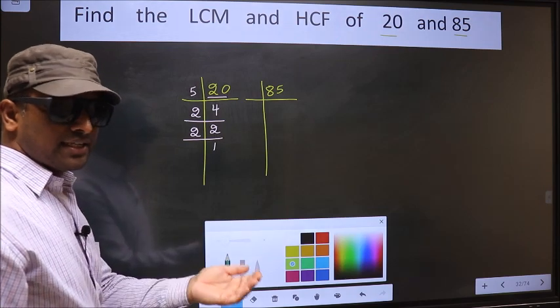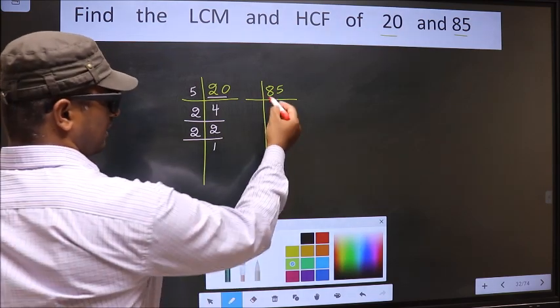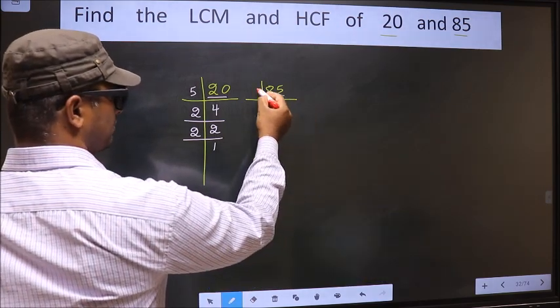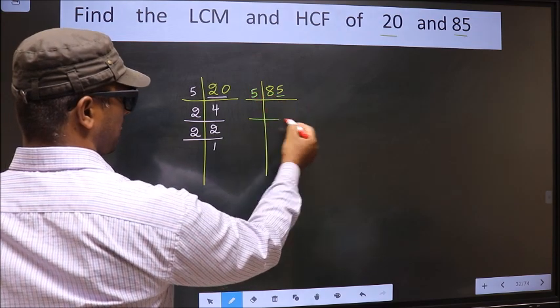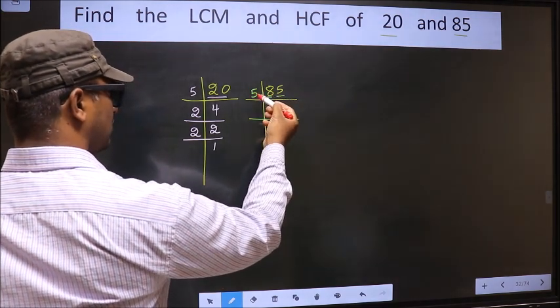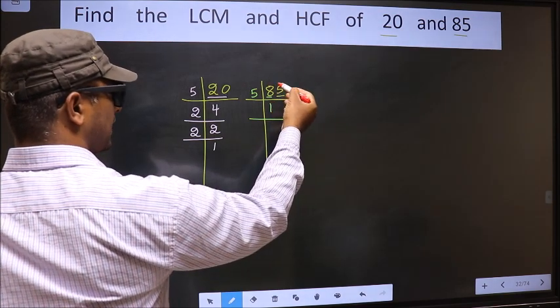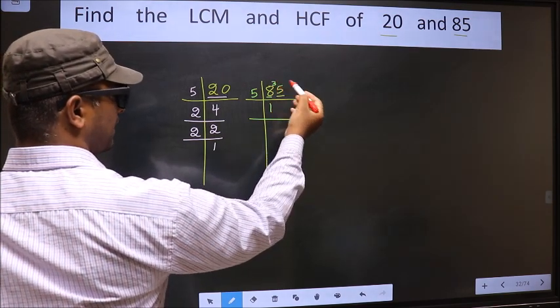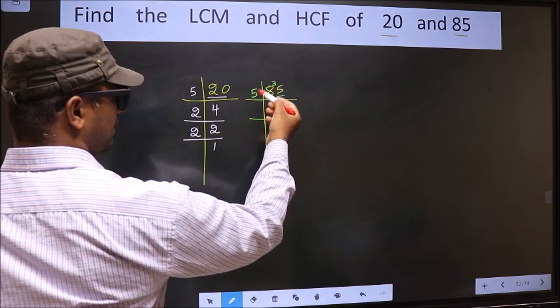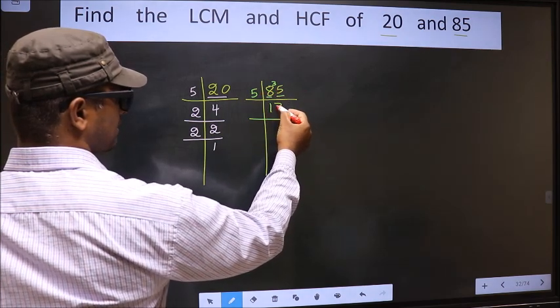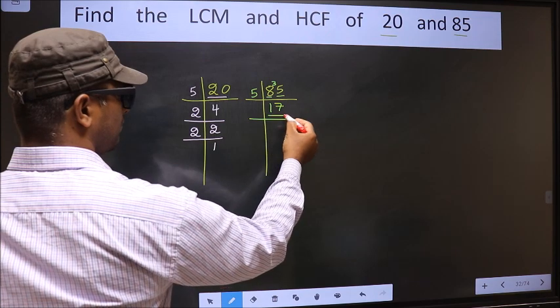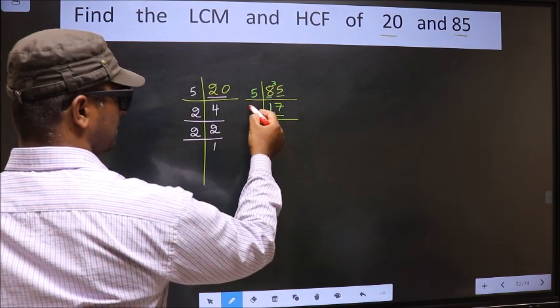Now the other number. Here last digit is 5, so we take 5 here. The first number is 8. A number close to 8 in the 5 table is 5 times 1, which is 5. 8 minus 5 is 3. 3 carried forward making it 35. When do we get 35 in the 5 table? 5 times 7 is 35. Now here we have 17. 17 is a prime number, so 17 times 1 is 17.